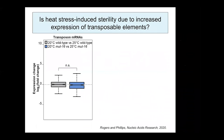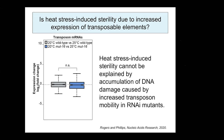One proposed cause of sterility in heat-stressed RNAi-defective mutants is increased transposition of transposable elements, resulting in DNA damage accumulation and increased transposon expression. We assessed differential expression of annotated transposable elements in the C. elegans genome and found that transposon mRNA expression is not significantly changed in MUT-16 mutants cultured at 25 degrees compared to MUT-16 mutants at 20 degrees or wild-type animals. This suggests that DNA damage caused by increased transposon mobility is not the underlying cause of heat-stress-induced sterility in MUT-16 mutants.